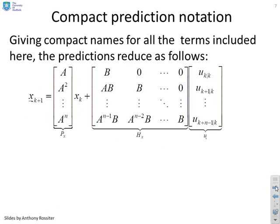So next what I want to do is give myself some names so I can make this more compact. This vector A, A squared all the way down to A^n, I'm going to call Px. This matrix here, B, 0, 0, 0, AB, B, 0, 0, 0, and so on, I'm going to call Hx.